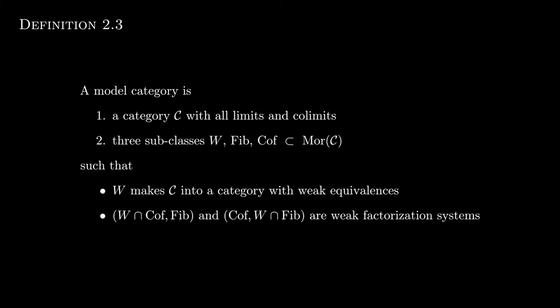Well, here is one set of requirements that does that. We require that W makes the category into a category with weak equivalences, obviously, and that the pair (acyclic cofibrations, fibrations) and the pair (cofibrations, acyclic fibrations) are weak factorization systems. We'll define weak factorization systems in the next video. But this should immediately remind you of the strange lifting duality we uncovered last time: that the maps that lifted against acyclic generating cofibrations were regular Serre fibrations, and the maps that lifted against regular generating cofibrations were acyclic Serre fibrations.